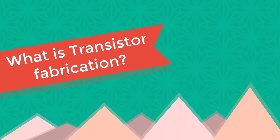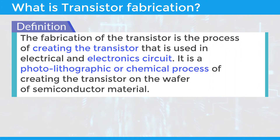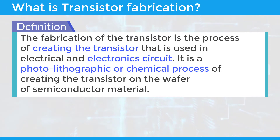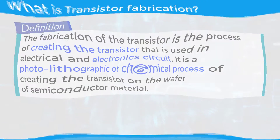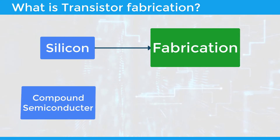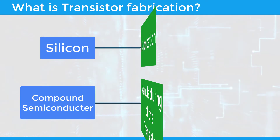What is transistor fabrication? The fabrication of the transistor is a process of creating the transistor used in electrical and electronic circuits. It is a photolithographic or chemical process of creating the transistor on the wafer of semiconductor material. Mostly silicon is used for fabrication, but compound semiconductors are also used for manufacturing the transistor.